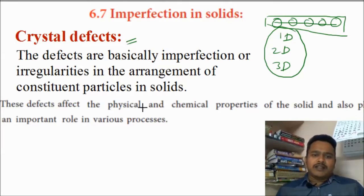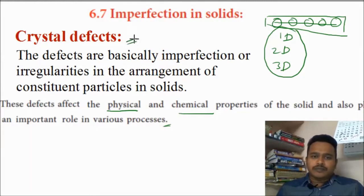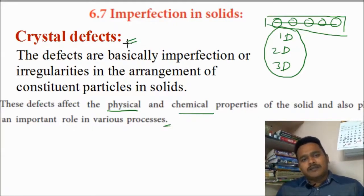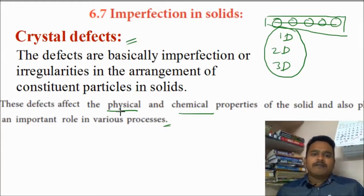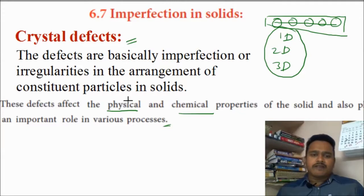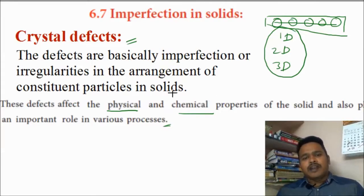Once the defect is there, that defect leads to changes in physical and chemical properties of the solid, and also plays an important role in various processes. Sometimes we may use that defect. Why physical properties are changing and chemical properties are also changing? Once the physical property is changing, you can use it in a positive way. Physical properties like melting point, boiling point, color, rigidness — these are all physical properties. Chemical properties means how it is going to react with other species if the arrangement is irregular.